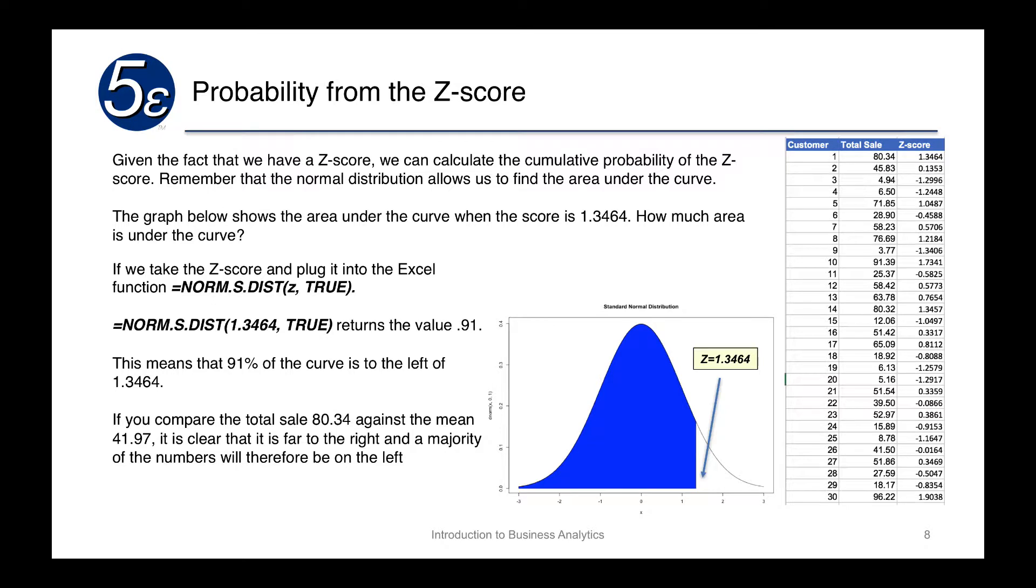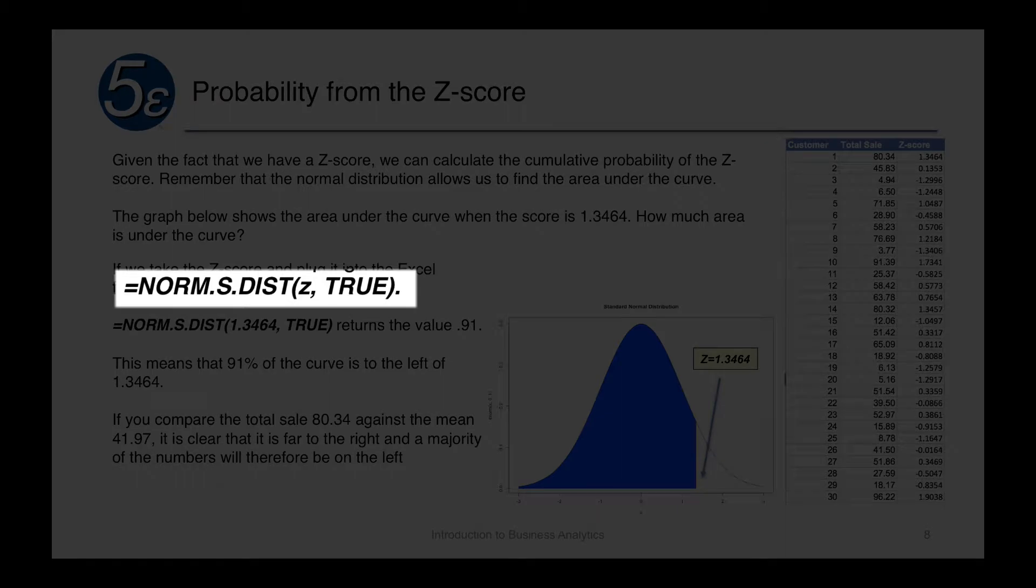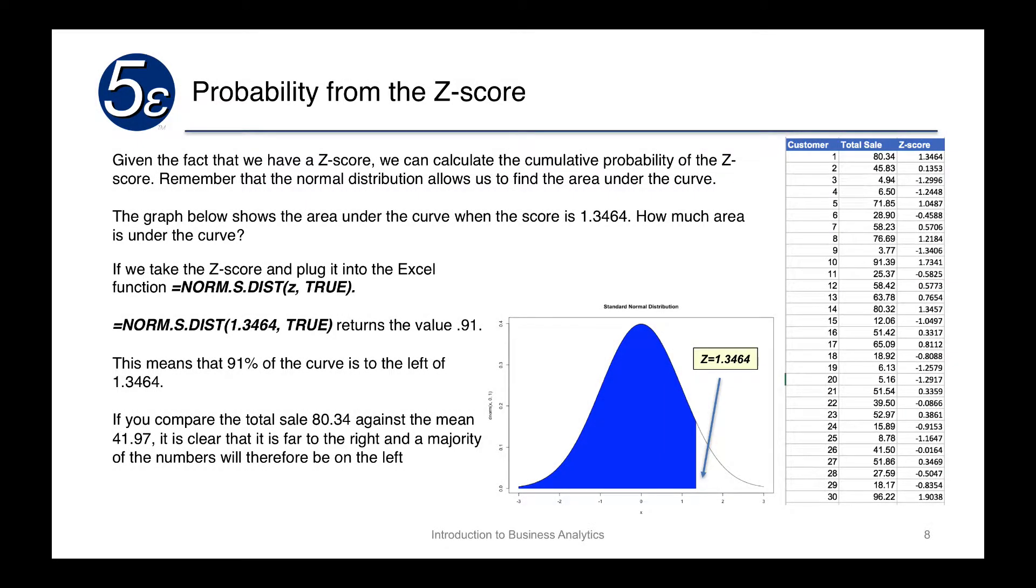Given the fact that we have a z score, we can calculate the cumulative probability of the z score. Remember that the normal distribution allows us to find the area under the curve. The graph below shows the area under the curve where the z score is 1.3464. If we have the z score of 1.346, we know it's 1.346 standard deviations away from the mean. So we want to calculate that whole area to the left. The way we do that is we take the z score and we use NORM.S.DIST. When we do that, we end up with a value of 0.91. This means that 91% of the curve is to the left of 1.3464. So we can also attribute this to being in the 91st percentile. If you compare the total sale 80.34 against the mean 41.97, it's clear that it is far to the right and a majority of the numbers will therefore be on the left.